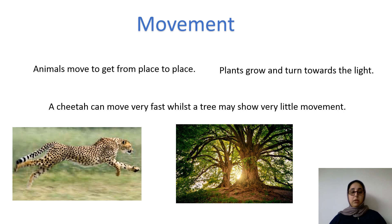Animals move to get from place to place and plants grow and turn towards light. For example, a cheetah can move very fast whilst a tree may show very little movement.